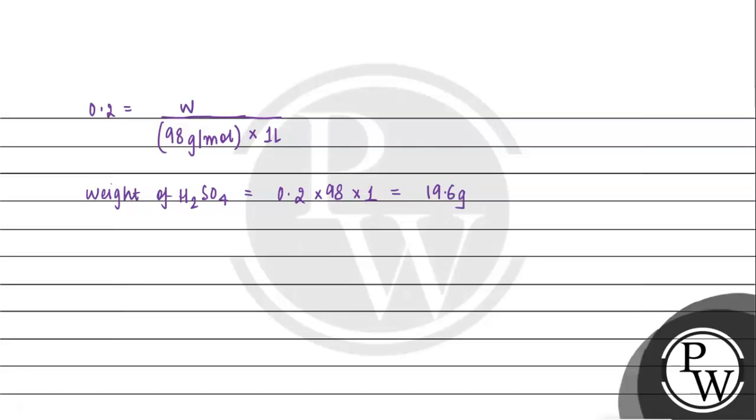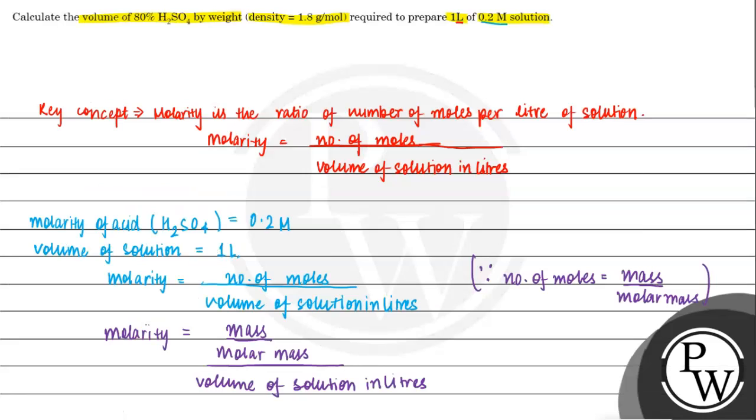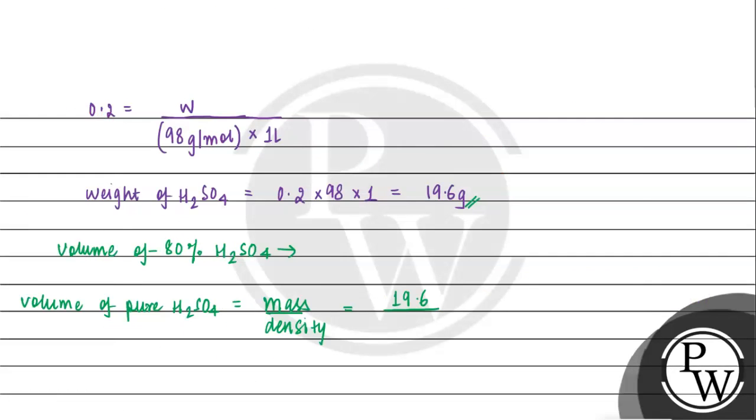We will calculate the volume of 80% H2SO4. So volume of pure H2SO4 is equal to mass upon density. We know the volume formula, we are studying from childhood. Volume is equal to mass upon density. So mass is 19.6, which we have now found. And density we have already given in question, which is 1.8 gram per mole. So we will put those things here: 1.8.